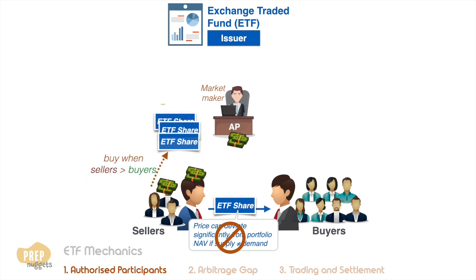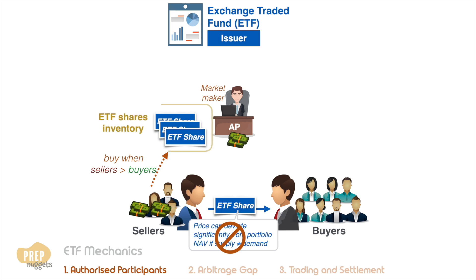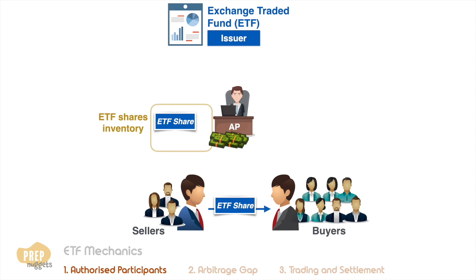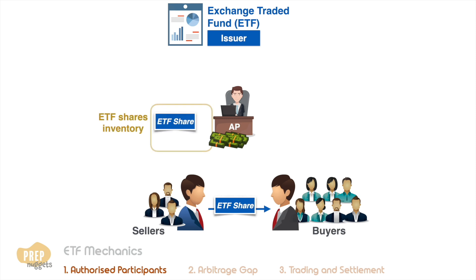In essence, the APs will buy ETF shares from sellers when supply is higher than demand, and sell ETF shares from their inventory when demand is higher. At the end of the day, the AP will look at its inventory and decide if it needs more or fewer shares to meet the next day's trades.